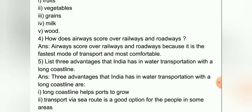Question number four: how does airways score over railways and roadways? Answer: airways score over railways and roadways because it is the fastest mode of transport and most comfortable.